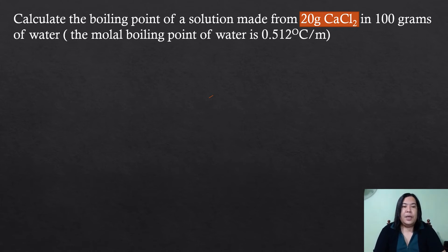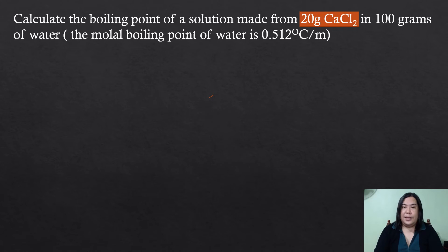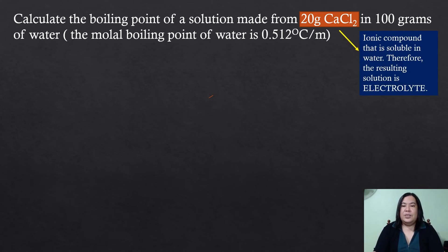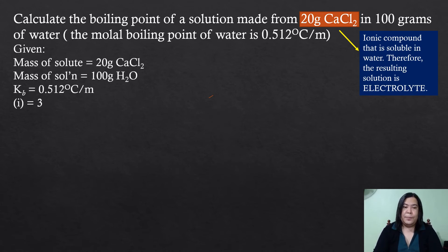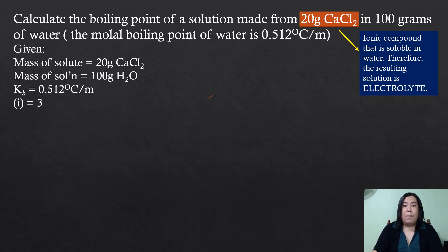Let us have a worked problem. Calculate the boiling point of the solution made from 20 grams of calcium chloride in 100 grams of water. The molal boiling point constant of water is 0.512 degrees Celsius per molality. Calcium chloride is an ionic compound that is very soluble in water, so the resulting solution is an electrolyte. When calcium chloride dissociates into its component ions, there is one calcium ion and two chloride ions, so the Van't Hoff factor is 3.